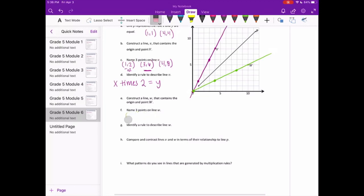Oh sorry, this is 4, 2, not 2, 4. So 4, 2, 8, 4. And let's use W. That's 10, 5. Identify a rule to describe line W. So this time it looks like the X is being cut in half to get Y. So X divided by 2 is equal to the Y value.